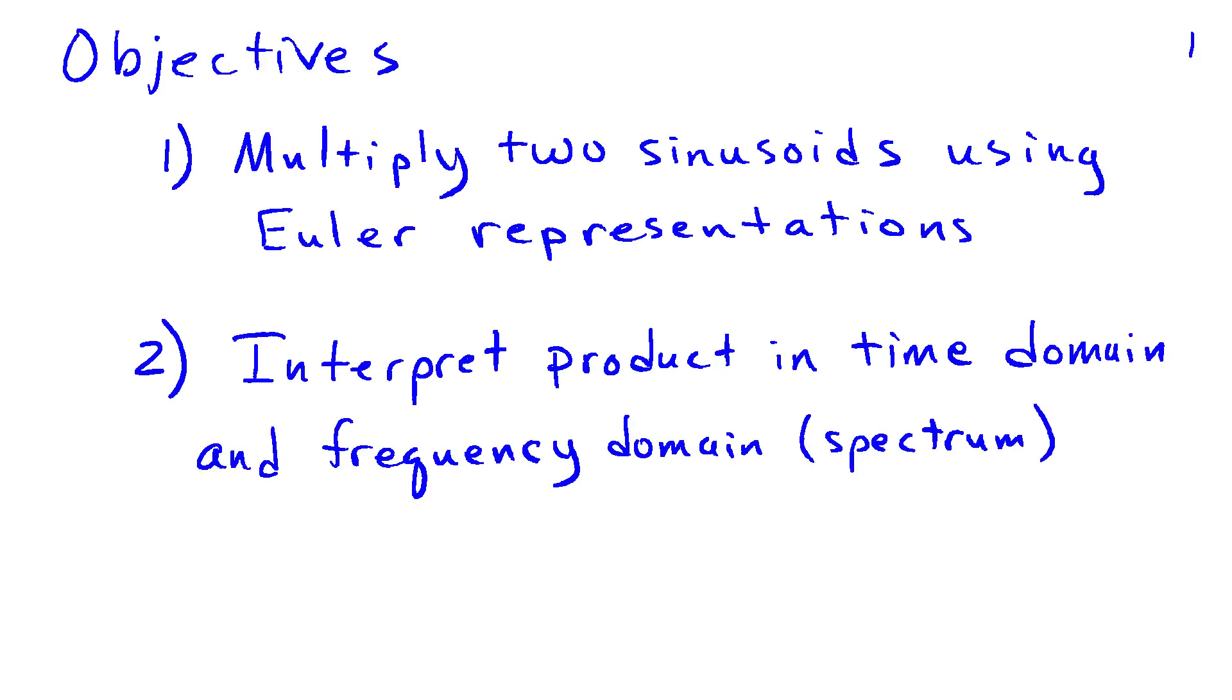Multiplication of sinusoids occurs frequently in signal and information processing. In this video, we're going to look at how to multiply two sinusoids using the Euler representation for each sinusoid as a sum of complex sinusoids.